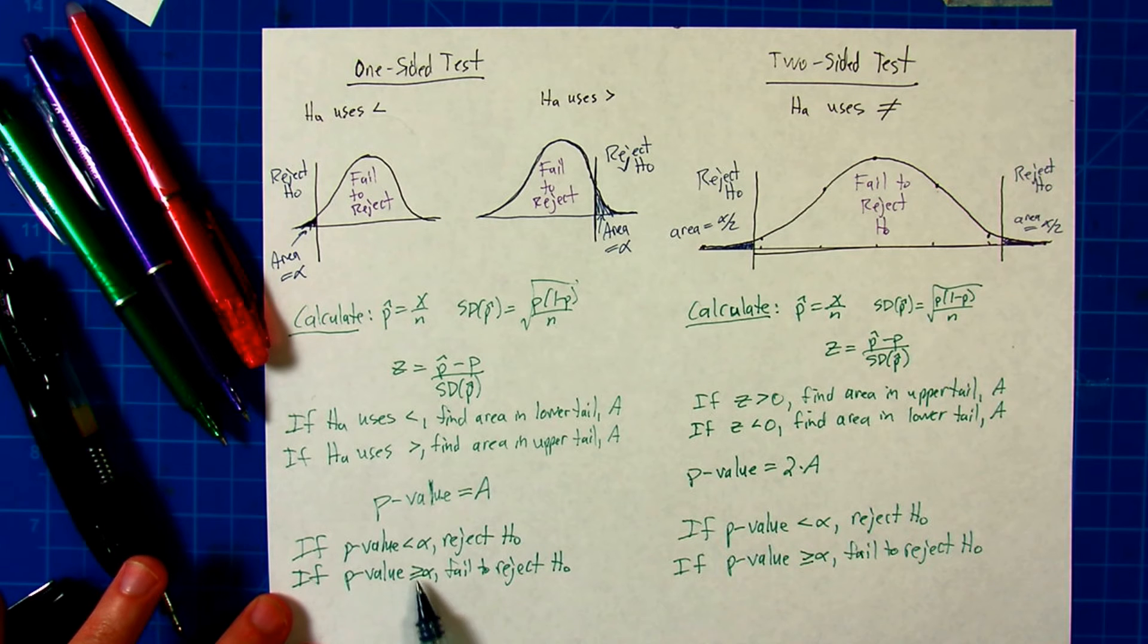Although, realistically, if the p-value was exactly equal to alpha, you'd panic a little inside and recheck your calculations.